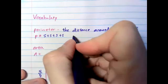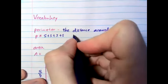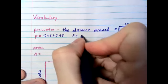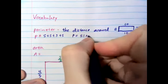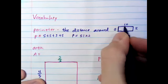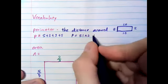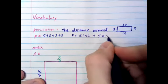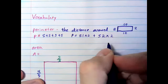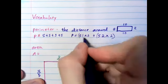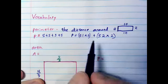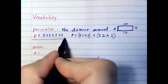Another way to show that would be perimeter equals side 1 times 2 plus side 2 times 2. But most of what we're doing can be done with this formula.